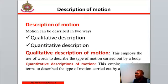Qualitative description of motion employs the use of words to describe the type of motion carried out by a body. Quantitative description can be called the types of motion and they include the following.